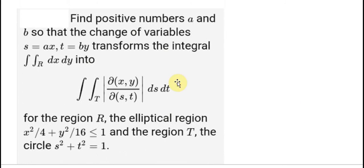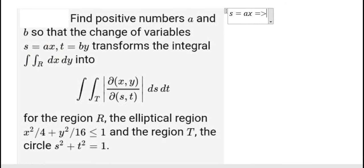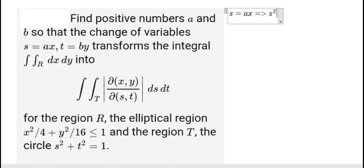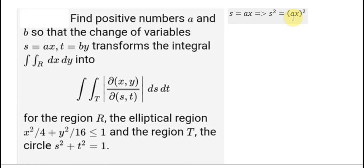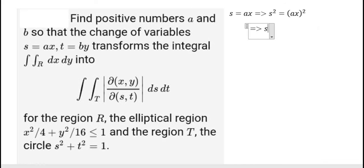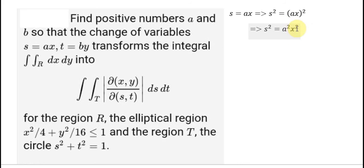I will show the answer. They provide x equal to as. We square both sides to get x squared equal to a squared times s squared. When we compare a squared s squared with x squared over 4 from the ellipse equation, we see that a squared equals 1 over 4.